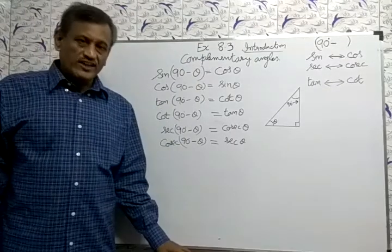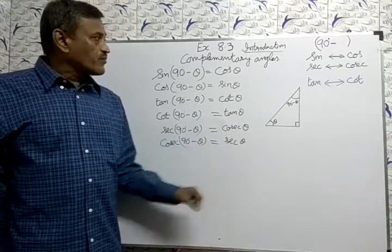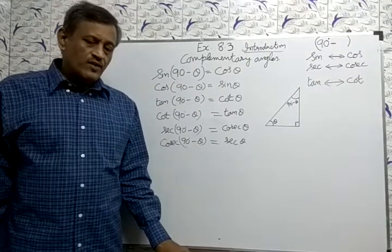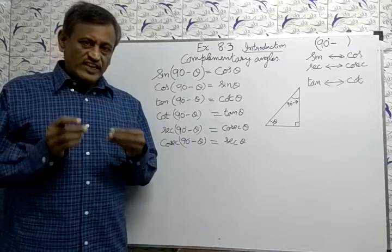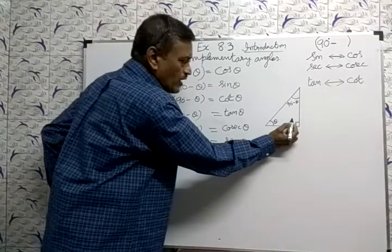This is 8.3 introduction. Complementary Angles - Complementary Angle means sum of 2 angles is equal to 90 degrees. See this triangle, one angle is 90 degrees.